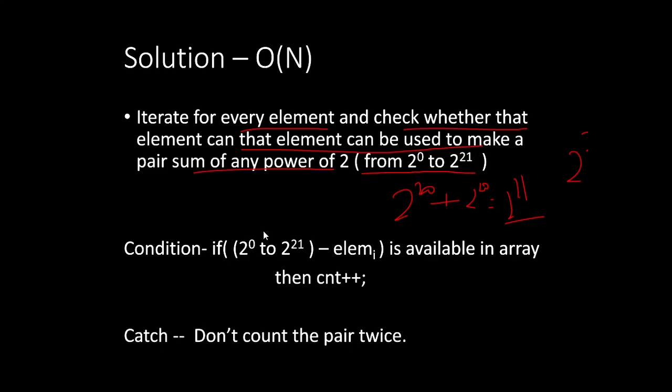Using this condition, we only need to check elements from 2 power 0 to 2 power 21. For all values from 2 power 0 to 2 power 21, we subtract every element and check whether the corresponding element after subtraction exists in the array. If that element is present, we increment our count.